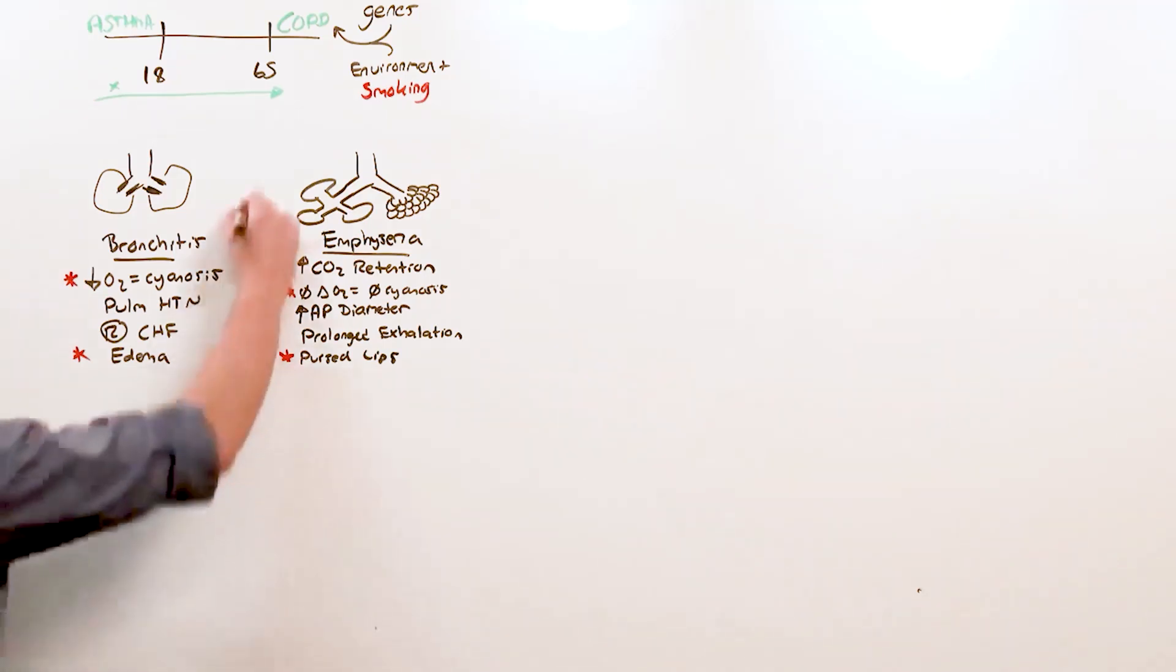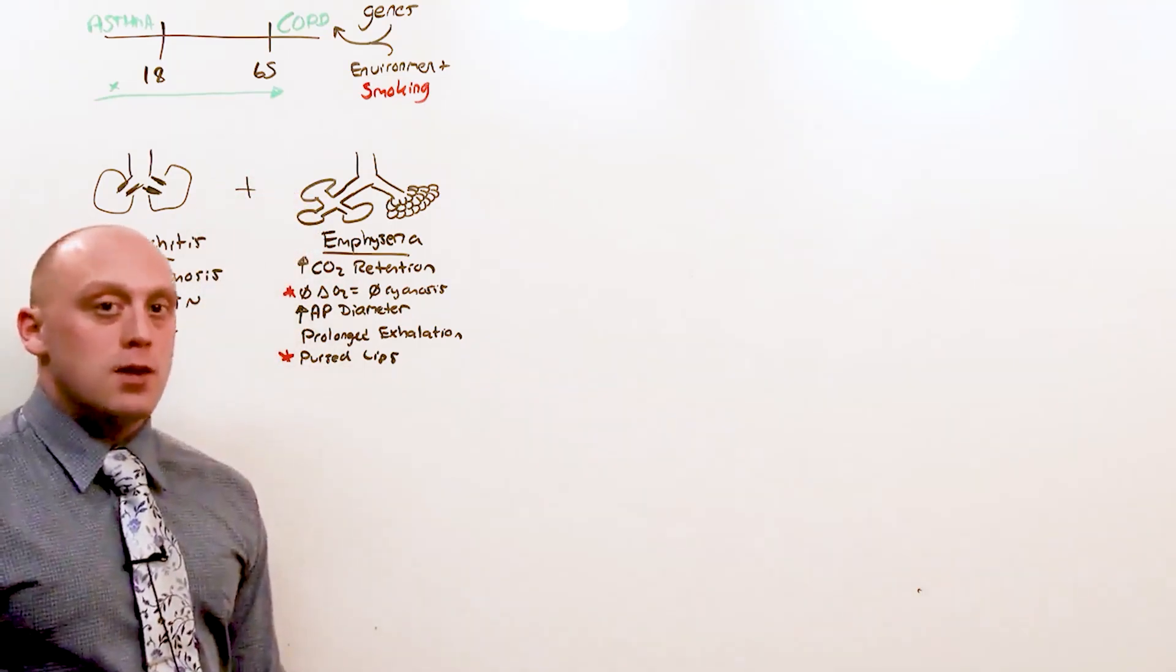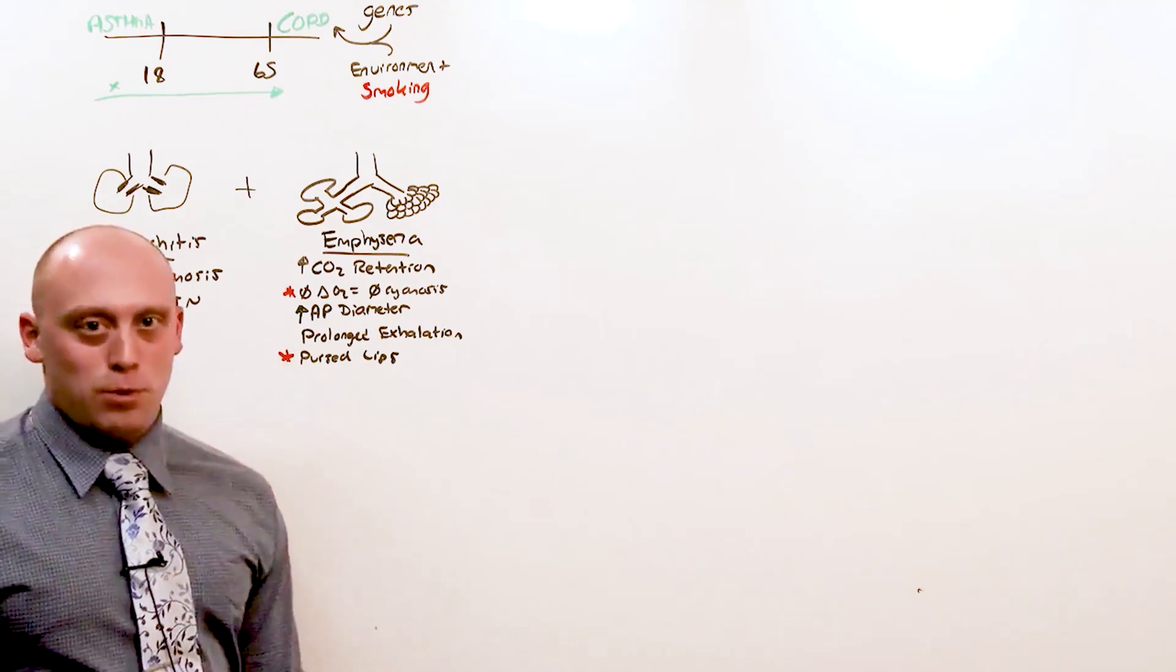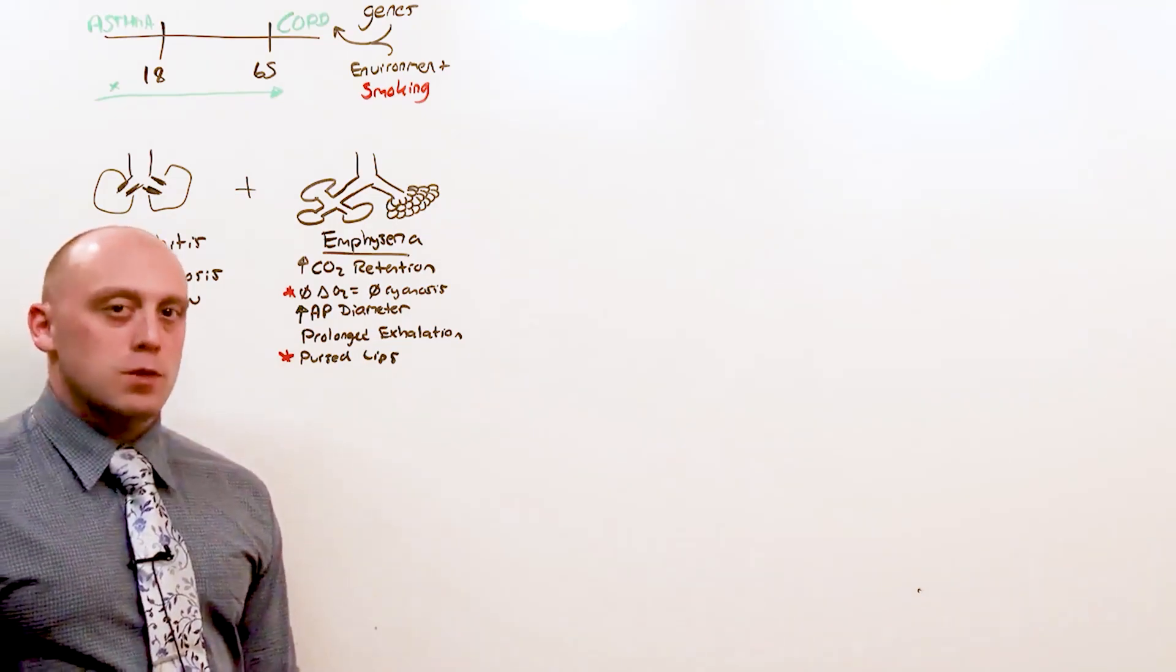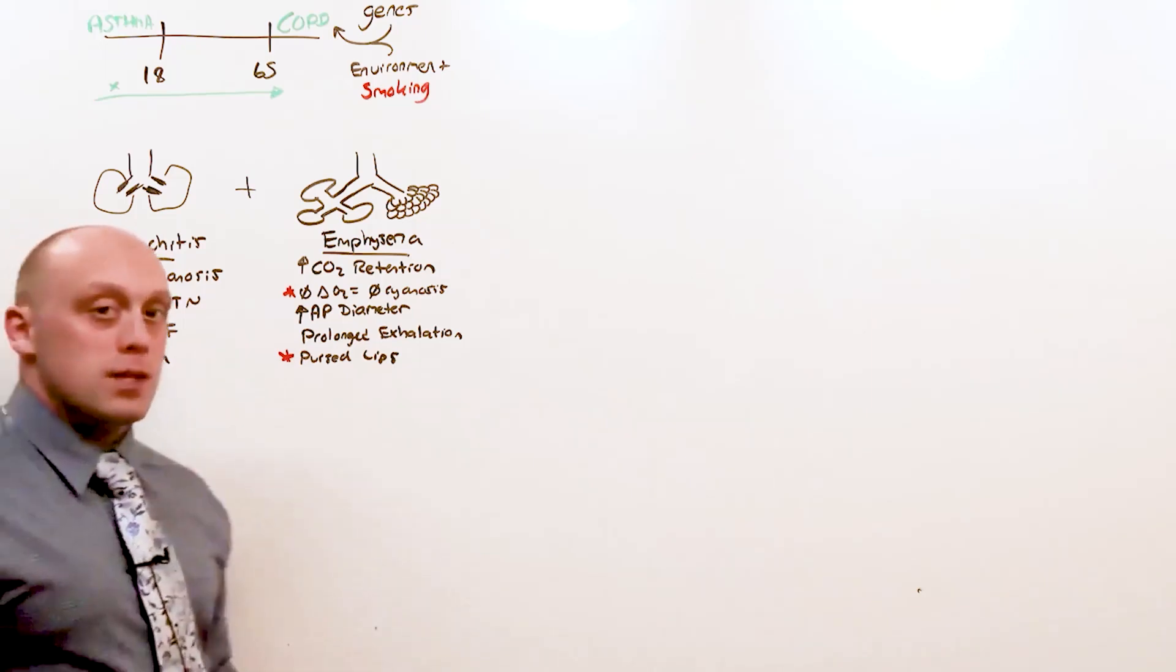In general, most patients are a combination of the two, where one characteristic may predominate. Most of the time, it's both. So if you see somebody who's got obstructive lung disease and has elements of emphysema and bronchitis, you want to make the diagnosis.